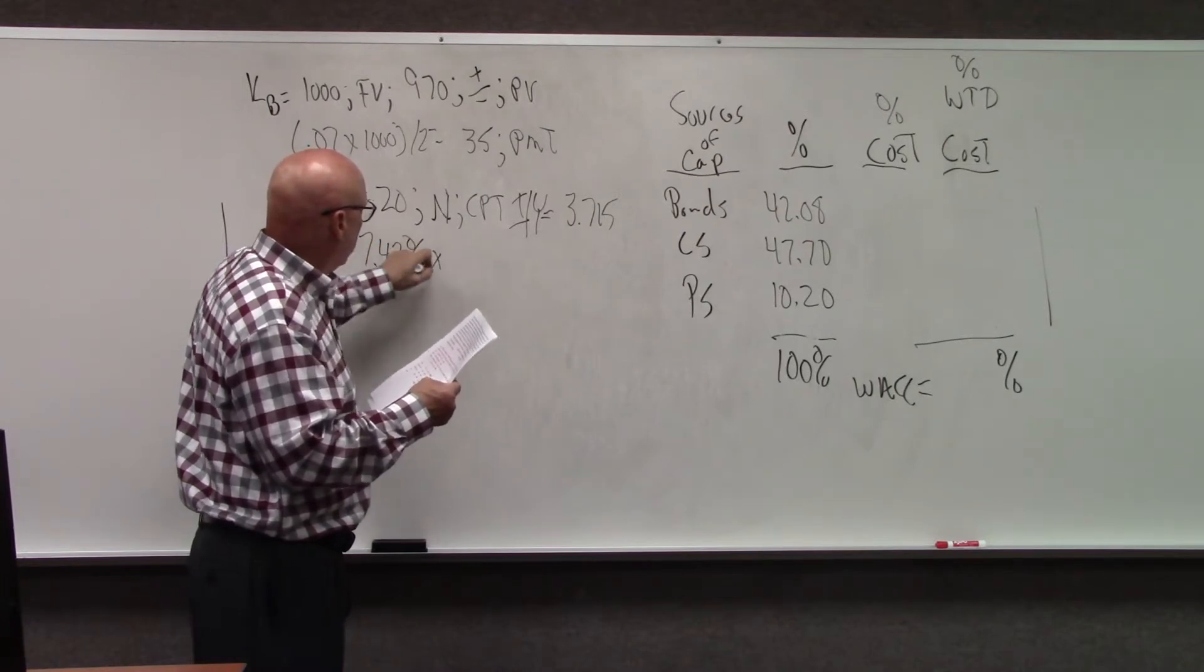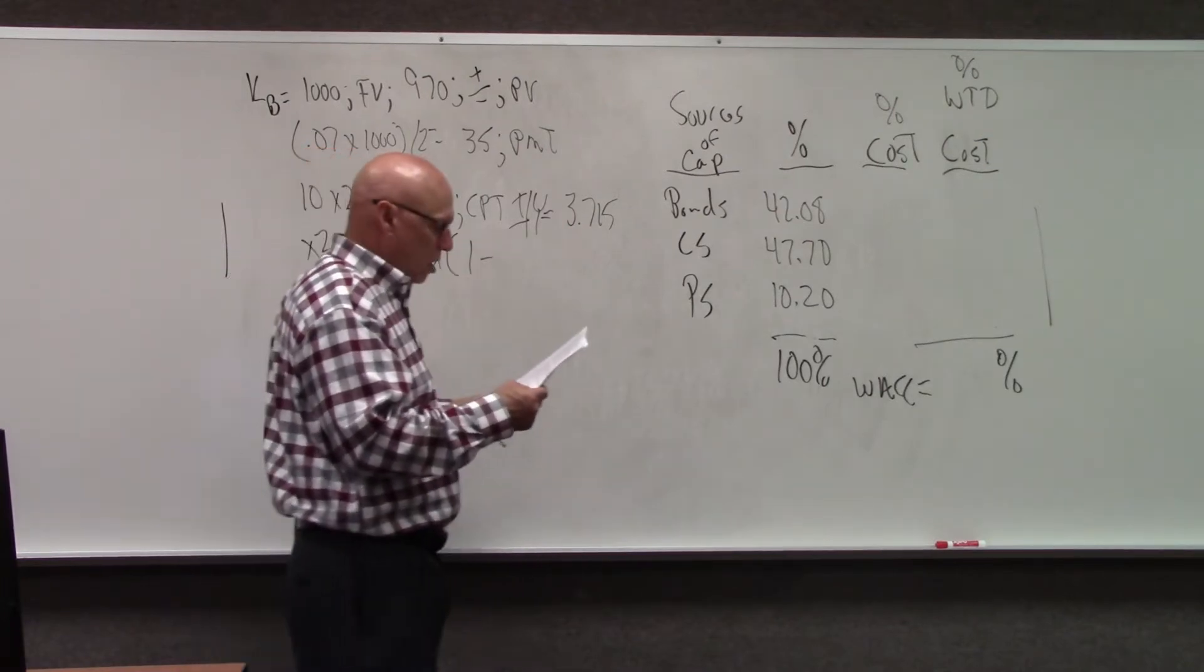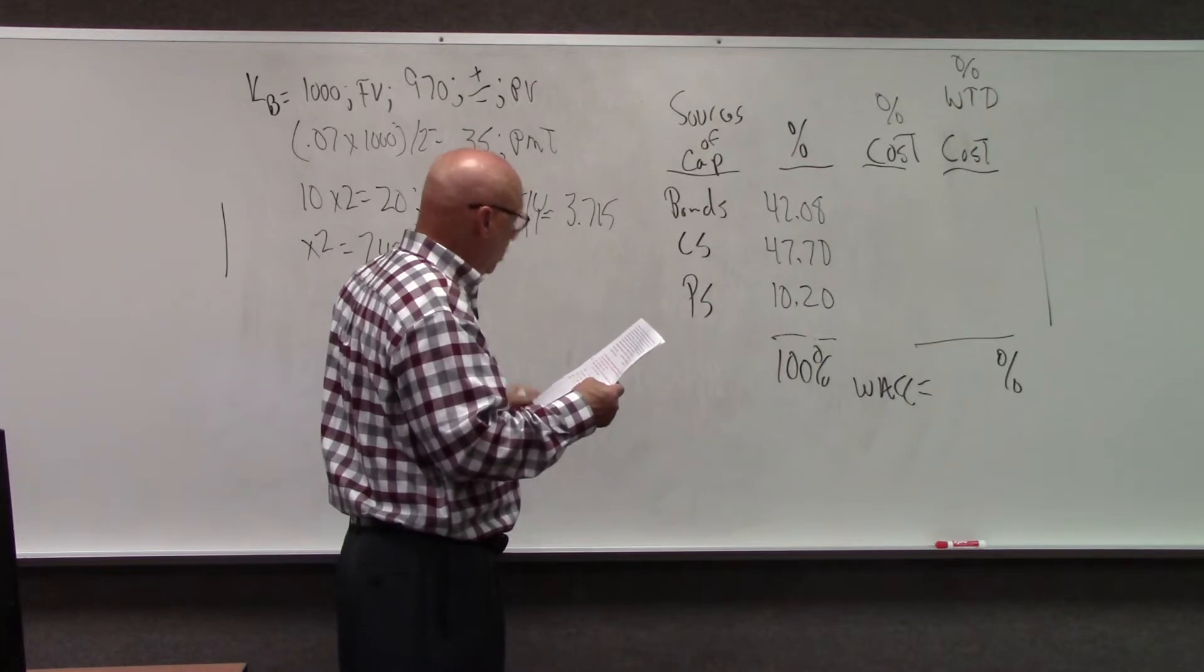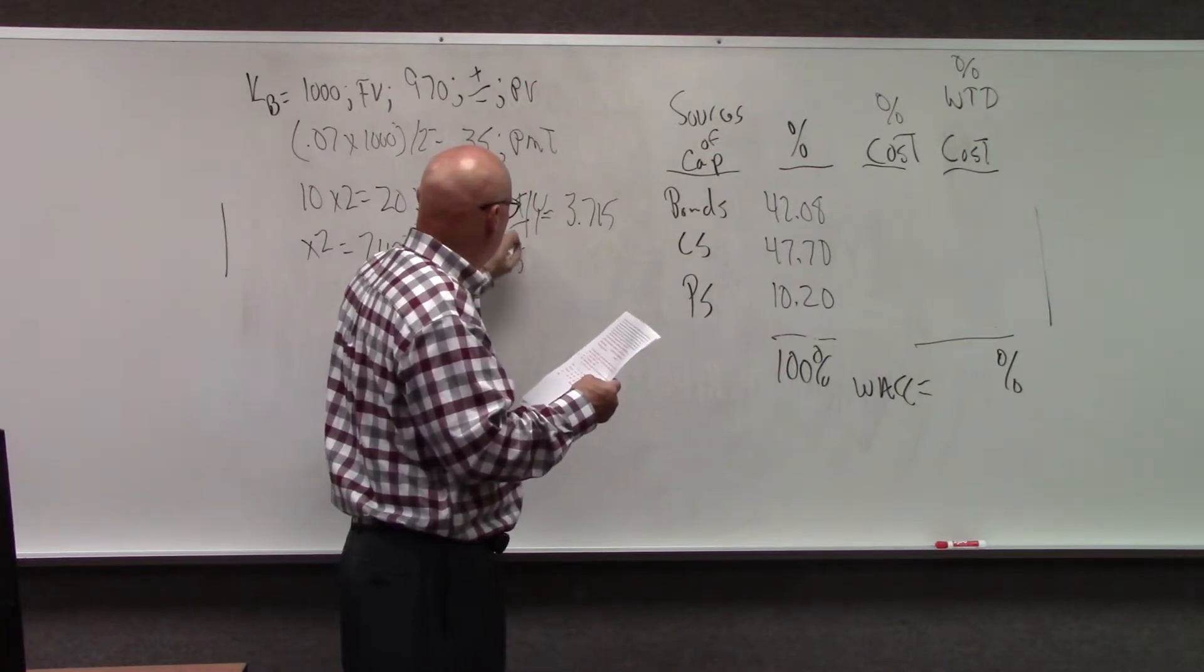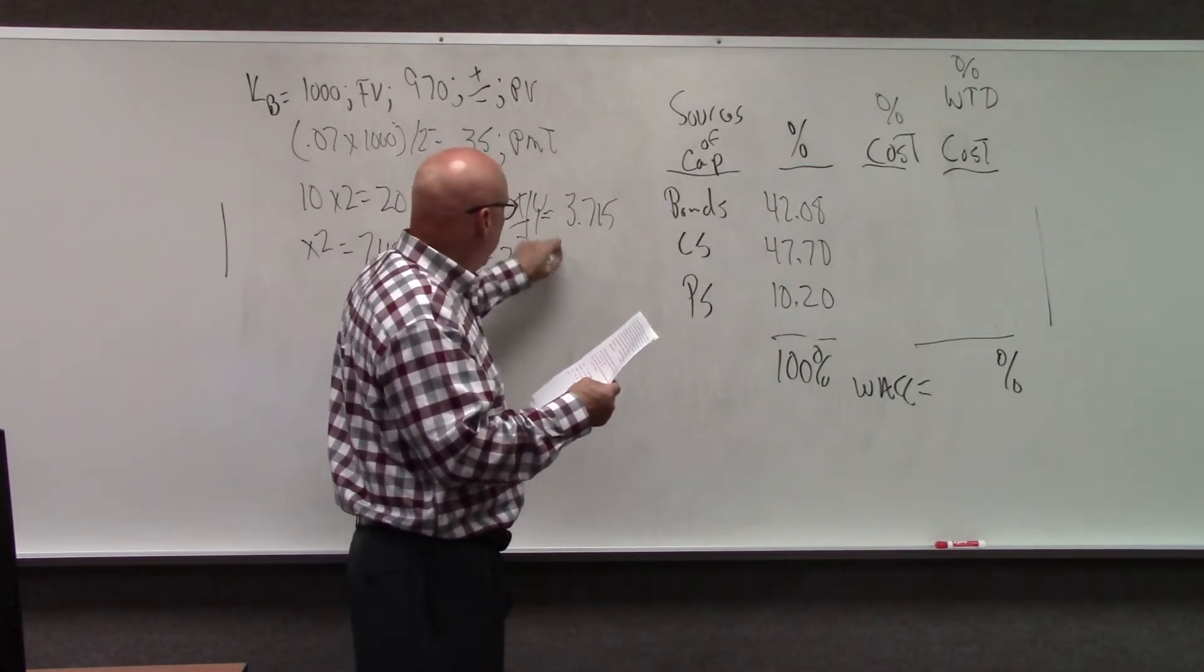Multiply that times 2 and we get 7.43%. We're going to multiply that times 1 minus the tax rate, and the tax rate is 35%, so we get 4.83%.